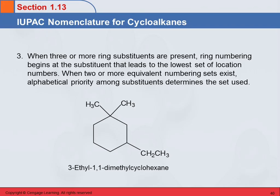Why is the numbering chosen that way? We could number two different ways. We could start with ethyl as carbon one and get 1-ethyl, 3,3-dimethyl. Or we go the other way and get 1-ethyl, 1,3-dimethyl. Adding up the locants: 3+3+1 = 7 versus 1+1+3 = 5. Five is lower than seven, so the second numbering set is better.